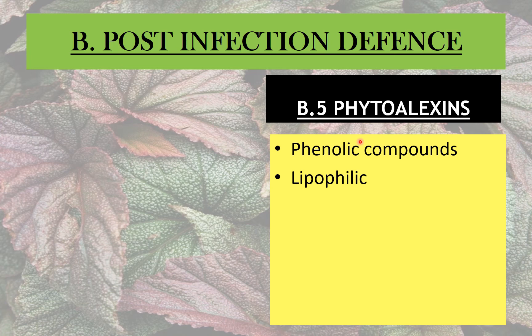Phytoalexins are usually low molecular weight lipophilic compounds. They are produced when there is an interaction between a host metabolite and a receptor on the pathogen's membrane. This interaction between host and pathogen leads to the production of a phytoalexin elicitor — a stimulus or precursor molecule to the actual phytoalexin. The phytoalexin elicitor is generally generated by the pathogen, though in some cases it can also be produced by the host plant. The elicitor enters the host and stimulates synthesis of the phytoalexin.